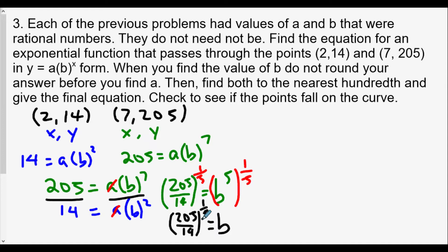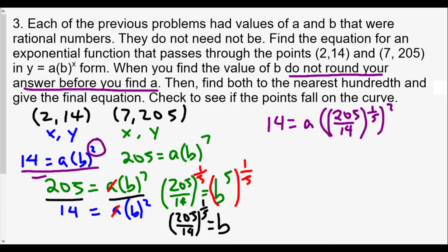Now we're going to plug the b value, this crazy decimal, into this equation to solve for a. So we have 14 equals a... Now you're saying to yourself, Mr. Gong, why am I not rounding off yet? Well, first off, it said in this case, do not round your answer before you find a. We're not going to round our answer before we find a. Because we're going to use this decimal. Really, the exact value is 205 over 14 to the one-fifth power. And we're going to take this number and the exponent here is two, so we're going to square this. The b value is replaced into this part of the equation.